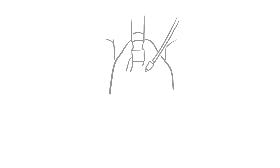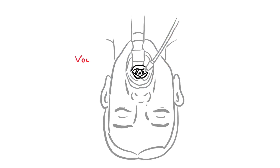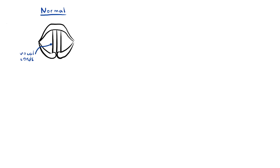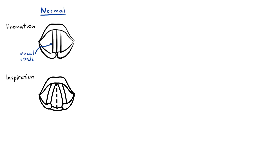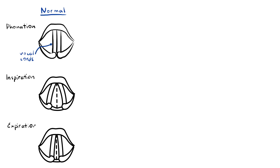Let's focus on recurrent laryngeal nerve palsy specifically. Here we are looking at a person who is about to be intubated — this is the view of the vocal folds we will be focusing on. Under normal circumstances, the vocal cords meet in the midline during phonation. On inspiration they move away from each other, and they return toward the midline on expiration, leaving a small opening between them. The recurrent laryngeal nerve is responsible for abduction — opening — and adduction — closing — of the vocal cords. It opens the vocal cords during inspiration and closes them during phonation and expiration.